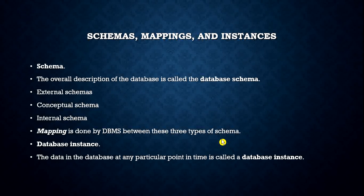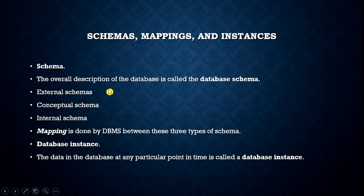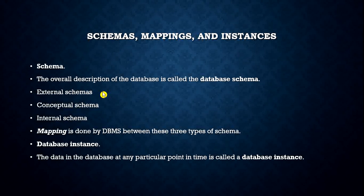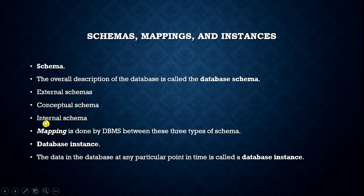Schema is the overall description of the database, including all entities, attributes, and relationships between them. Based on the three-level architecture, we have three types of schemas: external schemas at the external level, which include different types of views; conceptual schema at the conceptual level, which includes information about entities, attributes, and their relationships; and internal schema at the internal level, which includes the details of the internal model along with storage details.